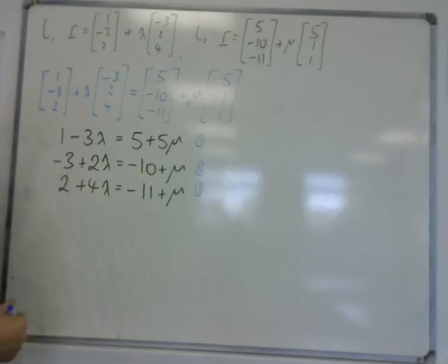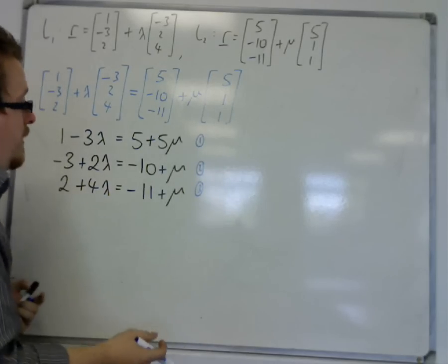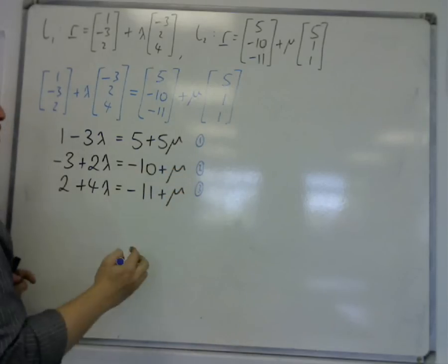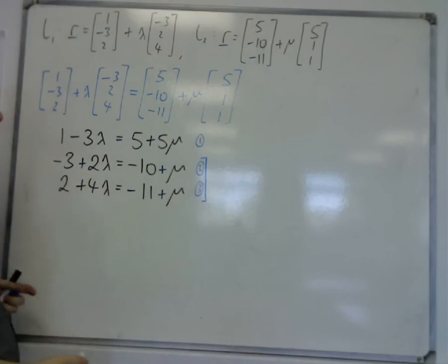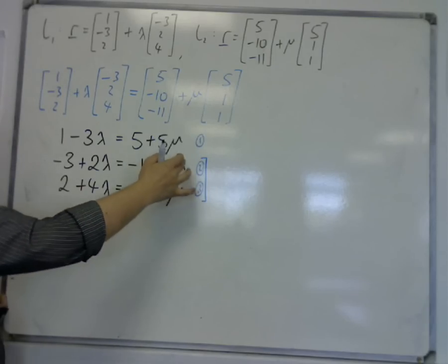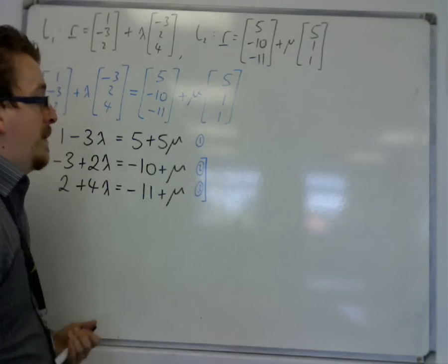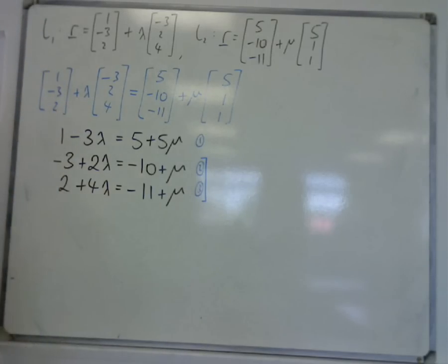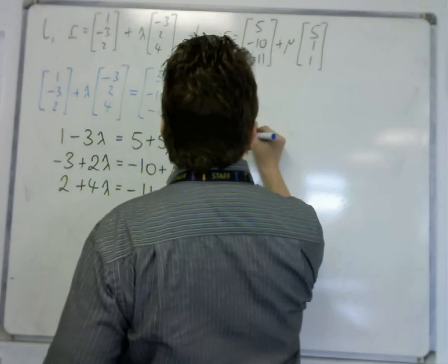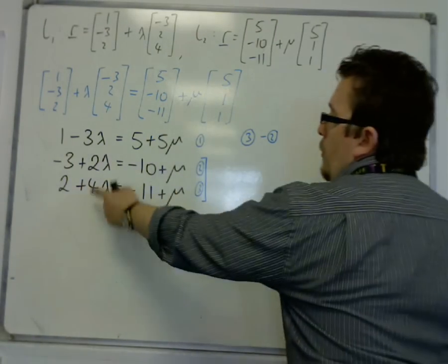So it's really your choice about which two to choose to work with. I'm going to work with equation 2 and equation 3, because this is going to be the easiest ones to manipulate, because I have plus mu and a plus mu. So if I do one equation take away the other, the mu's will be eliminated, just leaving me with lambdas. So I'm going to do equation 3 take away equation 2, because that will leave me a positive lambda.